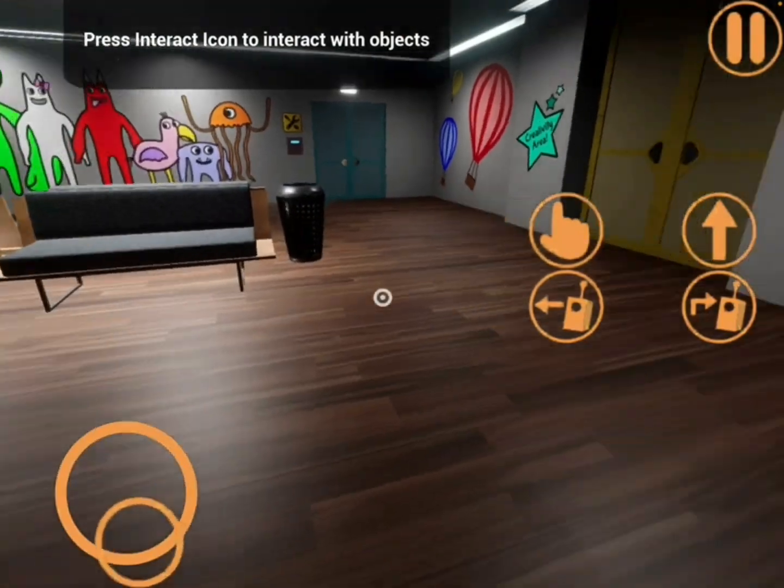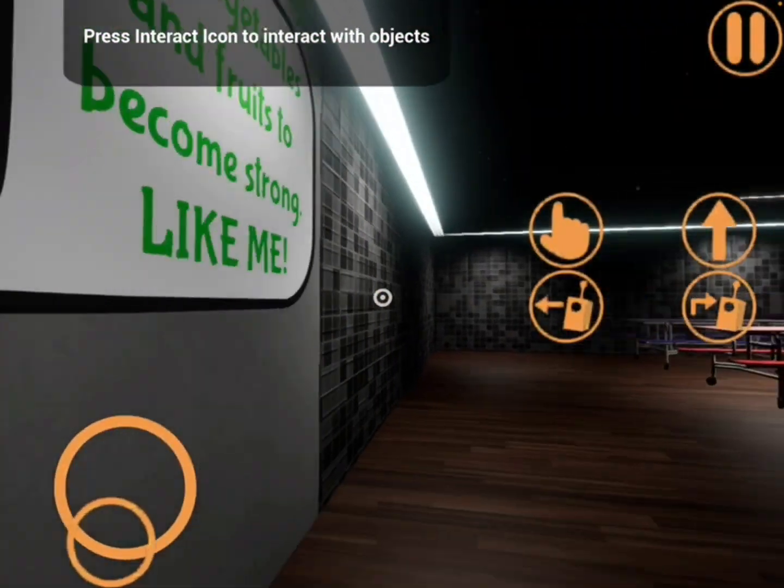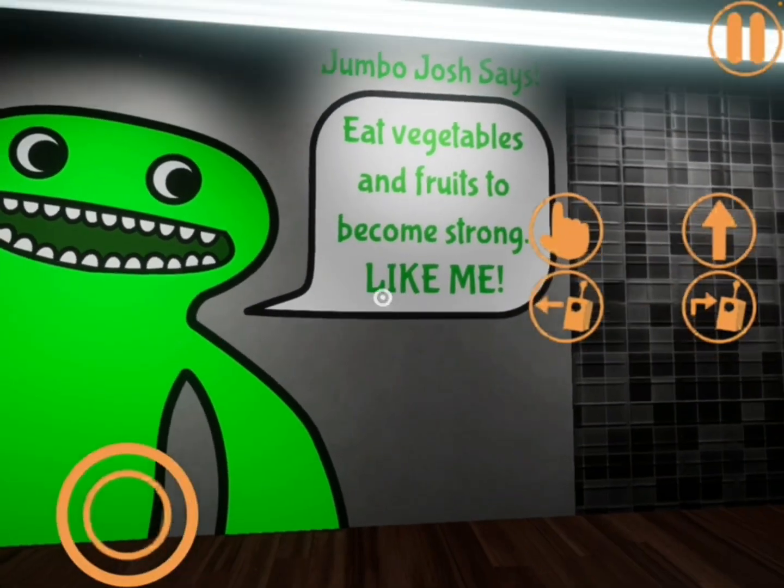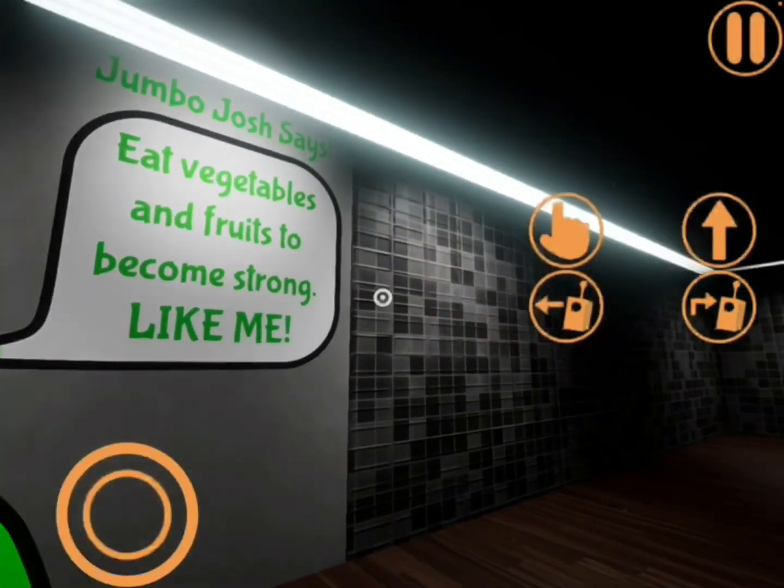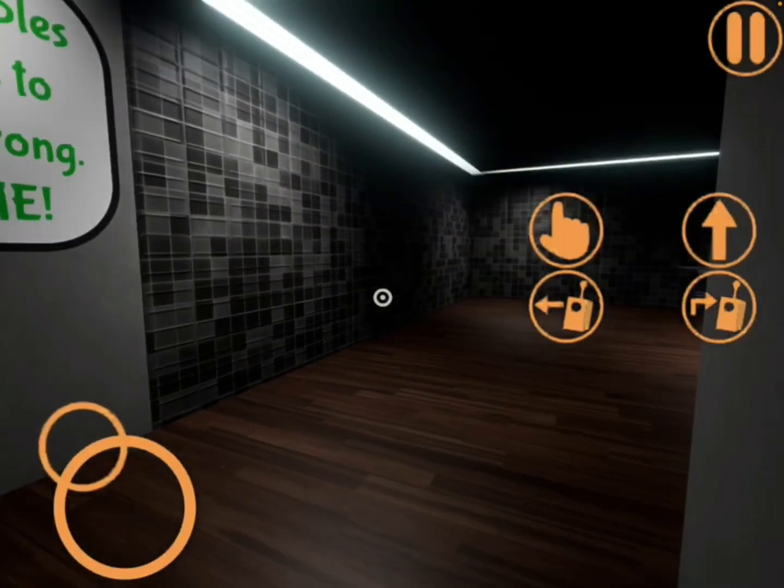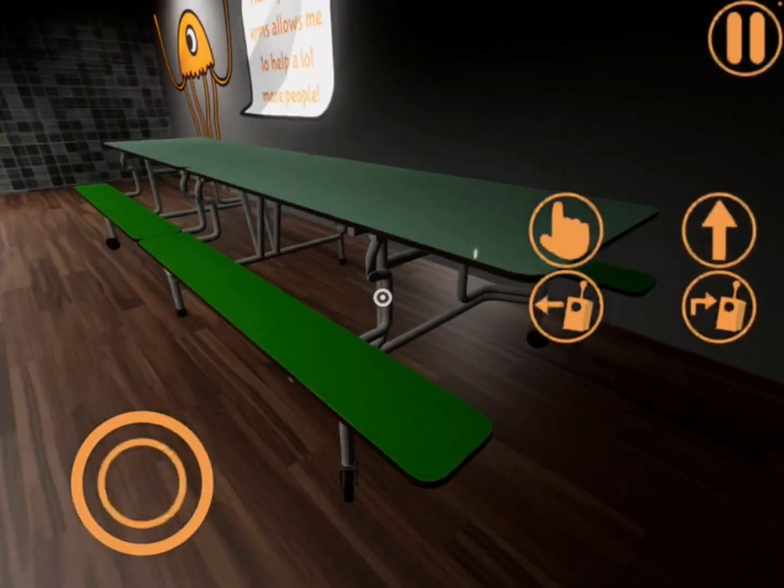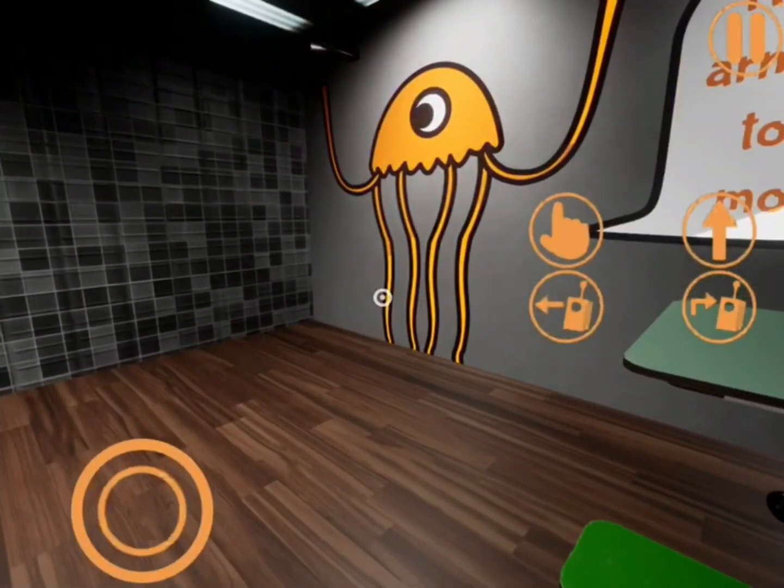Egg? Wait, before I grab that, I don't know what that is. Jumbo Josh says: Eat vegetables and fruit to become strong, like me! So, I don't know if I'm going to eat vegetables.